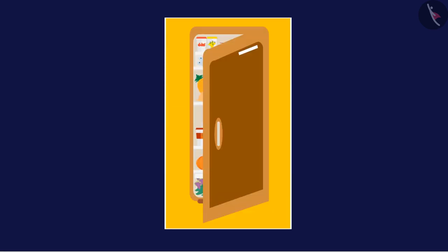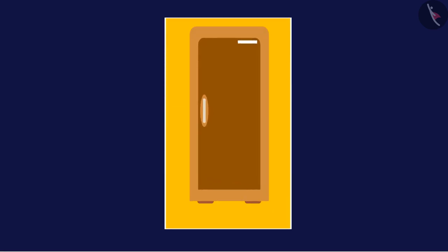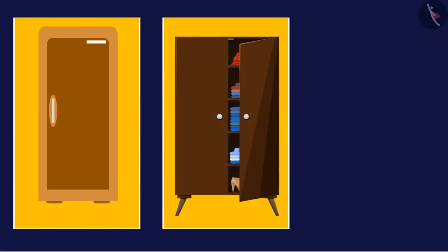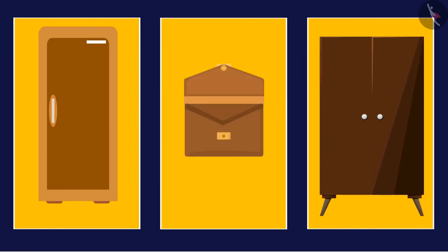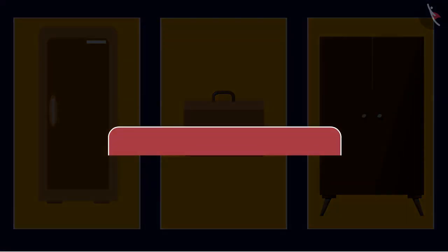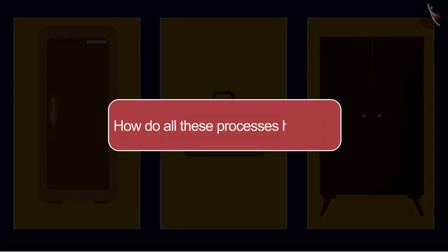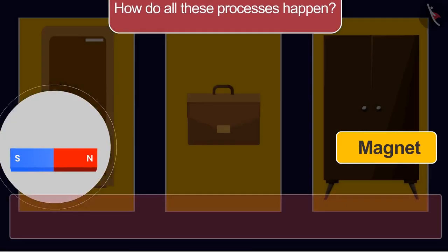Have you ever noticed the door of the refrigerator gets closed quickly when moved towards it? In the same way, the door of the cupboard also closes as soon as it reaches close to the cupboard. The button-like lock sticks to the back surface quickly. How do all these processes happen?